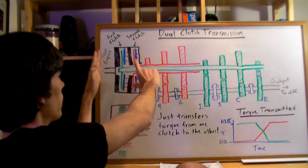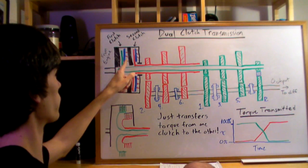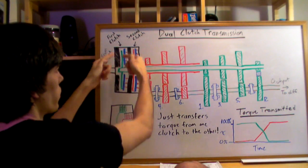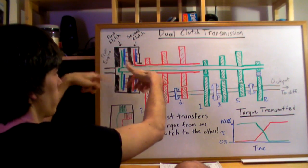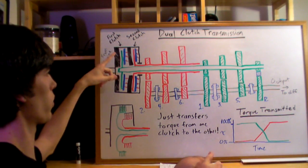In this clutch housing, only this first clutch is engaged. These blue pressure plates are going to squeeze that clutch together so that as this black housing rotates, this green rod here rotates with it.